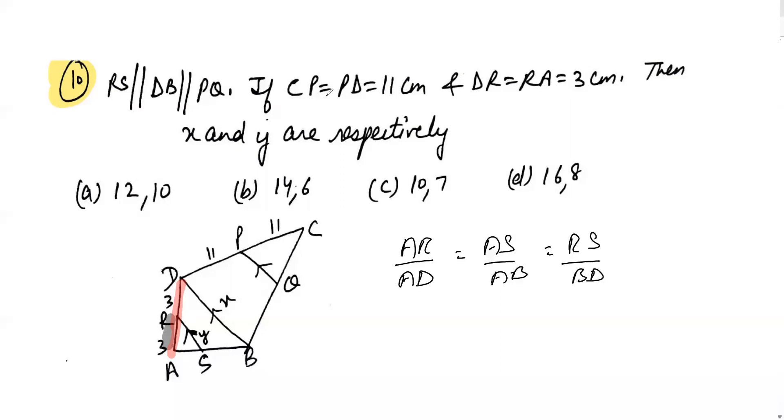Let's obtain this ratio AR to AD. As you can see, AR is 3 and AD will be 3 plus 3, that is 6. So we are going to get this as 3 by 6.